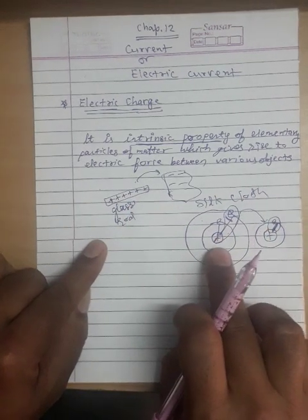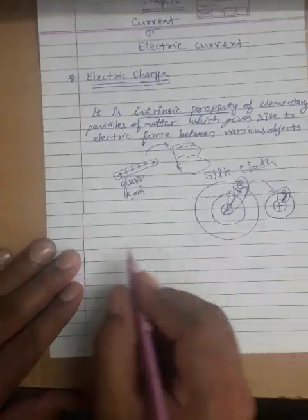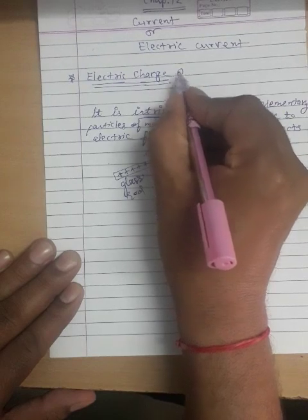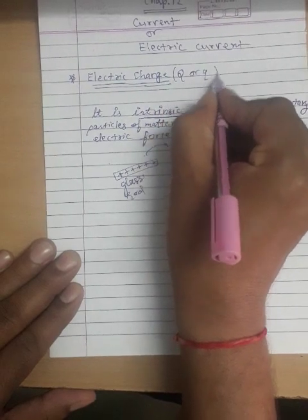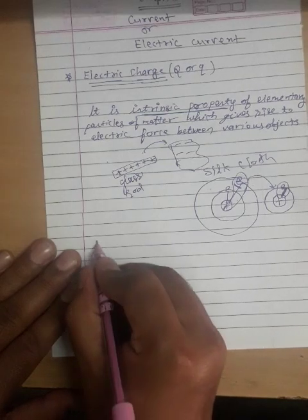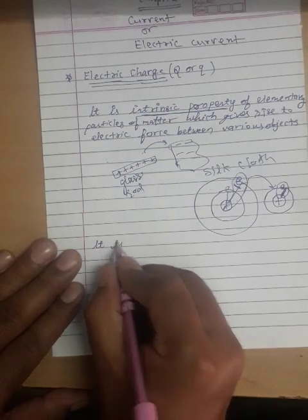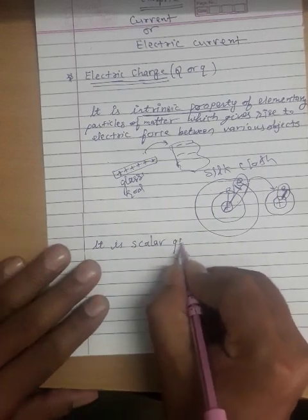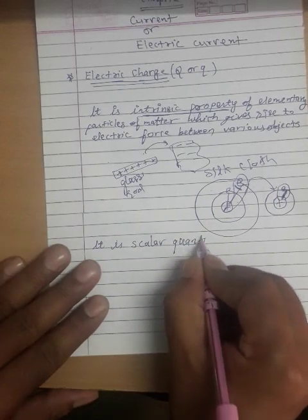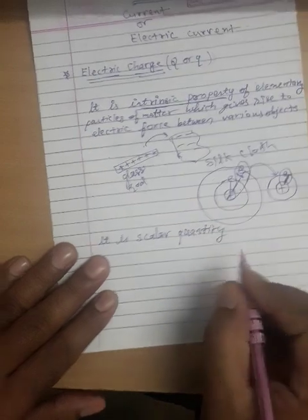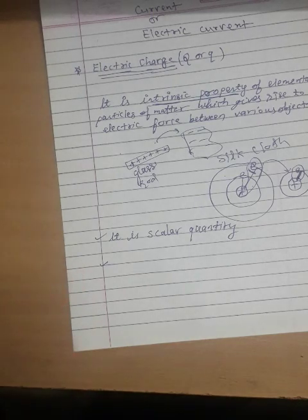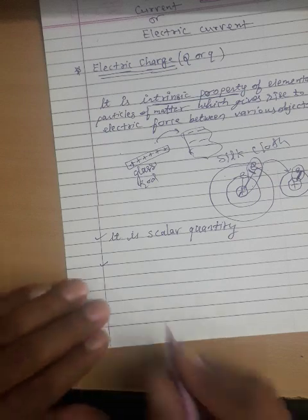This becomes a positive charge. So we have electric charge — its symbol is Q. It is a scalar quantity, meaning it has no direction.